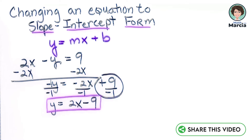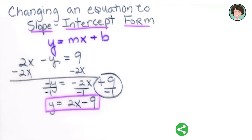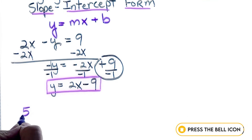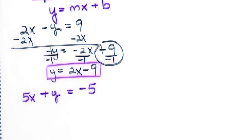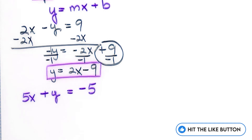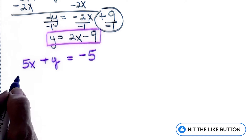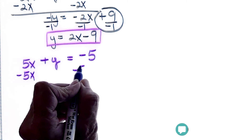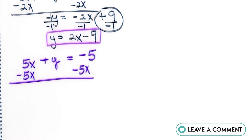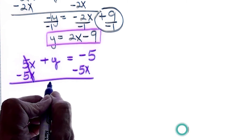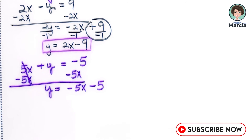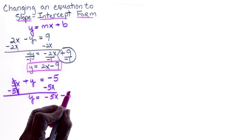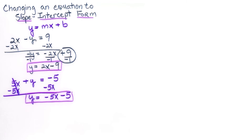Let's try another equation. If we have 5x plus y equals negative 5, the x must be on the other side, so I subtract 5x from both sides. The 5x cancels out and I end up with y equals negative 5x minus 5 — that's our equation in slope-intercept form in just one easy step.